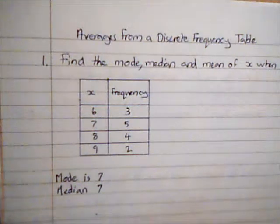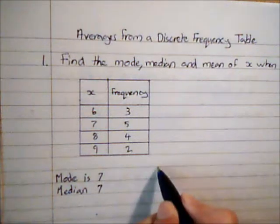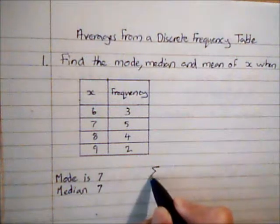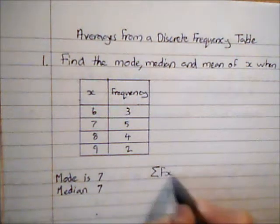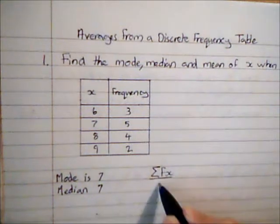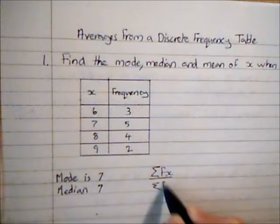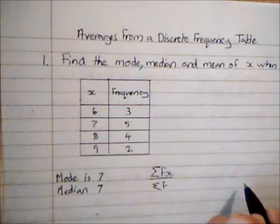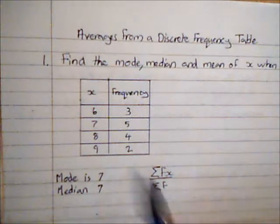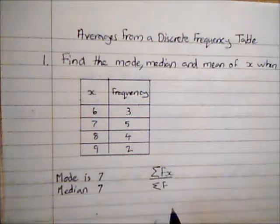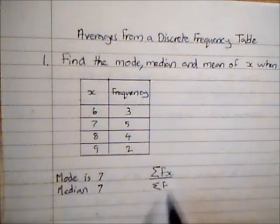Now to calculate the mean, I'm going to do the sum of the data divided by the number of bits of data. In this case we use the formula sigma fx over sigma f. This is the sum of the frequencies times each data divided by the sum of the frequencies.